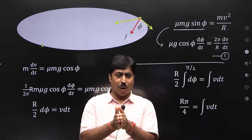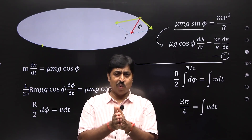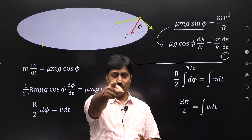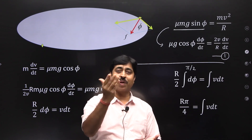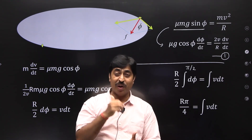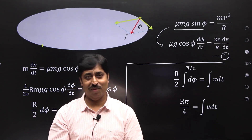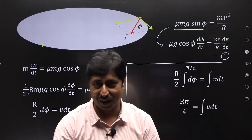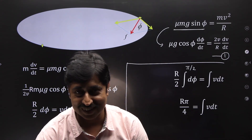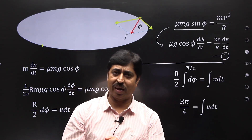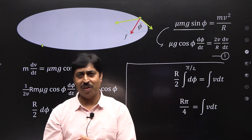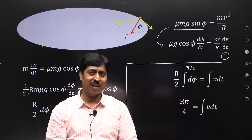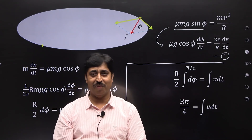In order to attain the top speed, the motorcycle must travel through a distance of pi r by 4. If you are watching this video, share it and feel happy that you have understood this question properly. In the next video, we will see a new concept. Goodbye.